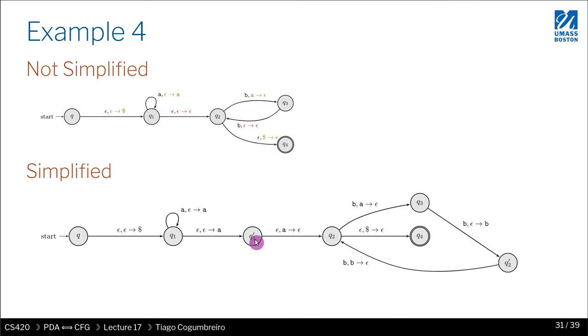Okay, so let's see how to convert it. You just create a new state. Let's call it Q1 prime, where you, here you had Epsilon, and now you have, you're pushing A and then popping A.